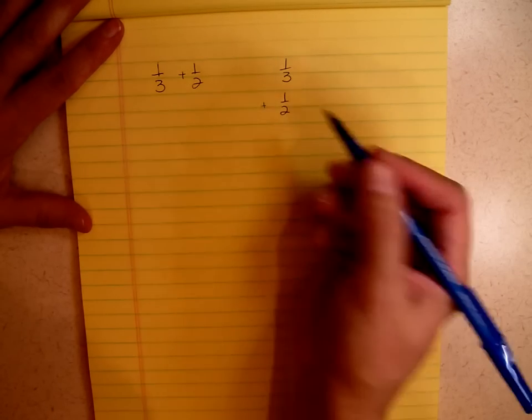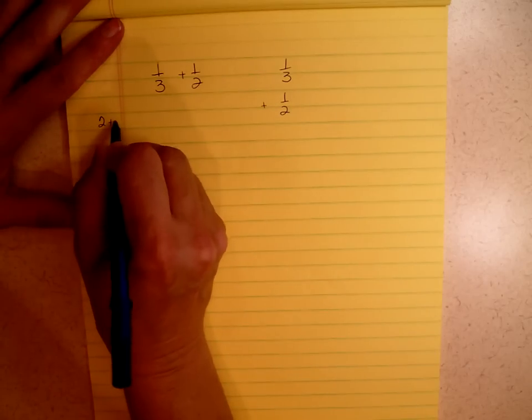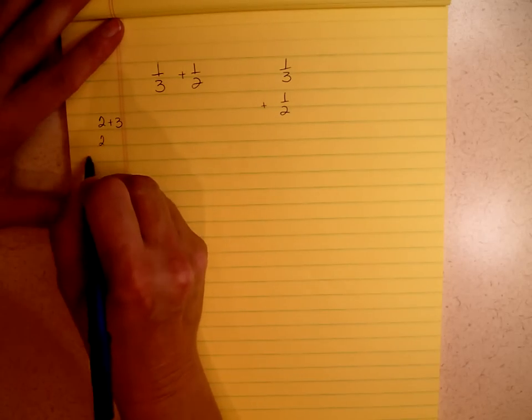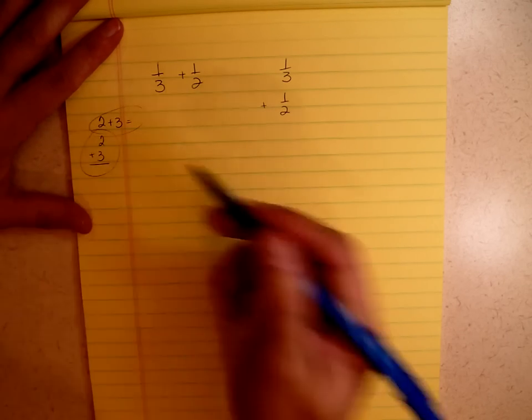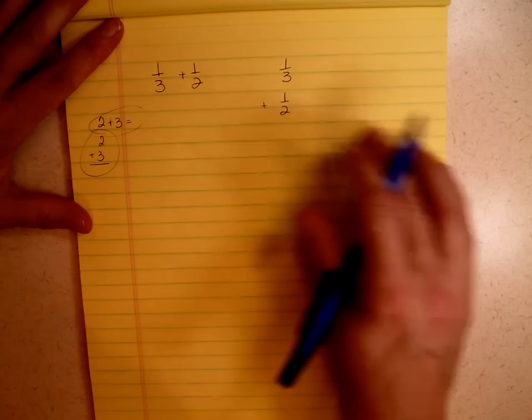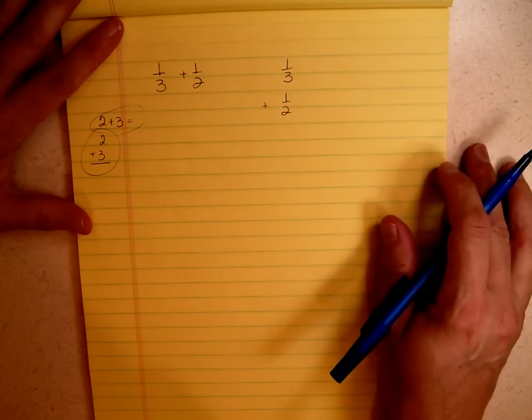Kind of like when you were a kid and you could write two plus three that way, or two plus three that way. Either way was the same problem, just written different ways. With fractions, when you're using a traditional algorithm, this sometimes works better.